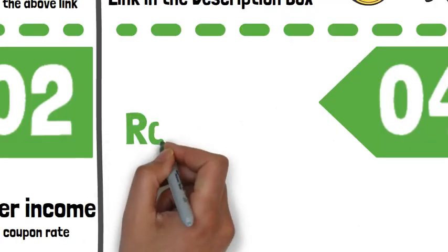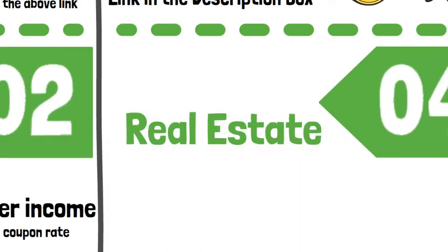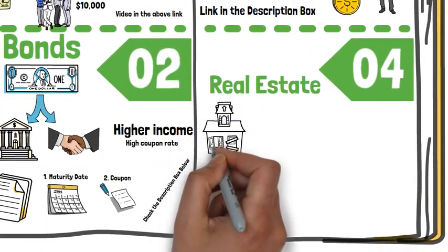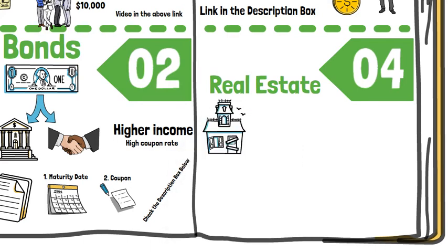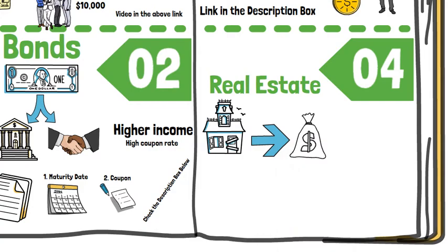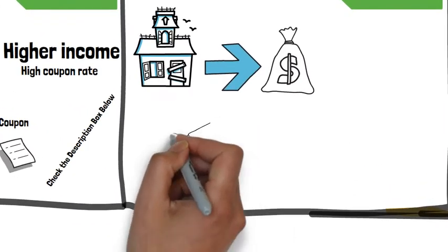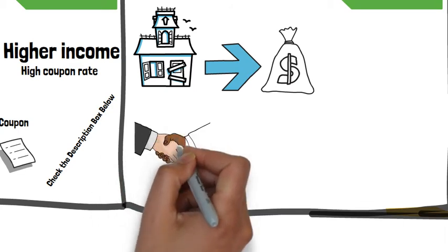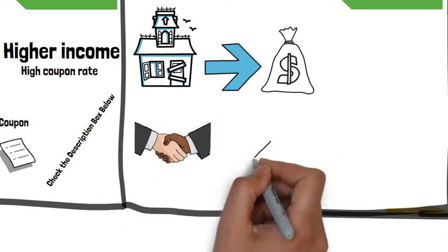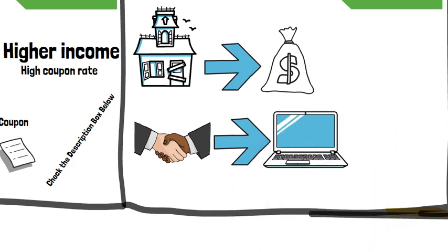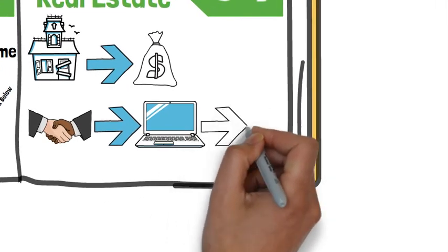Option number four: real estate. There are two ways to invest in UAE real estate. The first way is to buy a property, rent it out, and generate a monthly income. The second way is to invest in a real estate crowdfunding platform, where you and a group of people buy a property through a crowdfunding platform and rent it out. Then immediately you will start getting your share of the monthly rent.